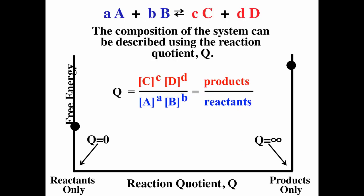The reaction quotient Q is used to monitor the progress of the reaction. It equals products over reactants, where the concentrations of products are raised to the power of their coefficients, and the concentrations of reactants are also raised to the power of their respective coefficients.